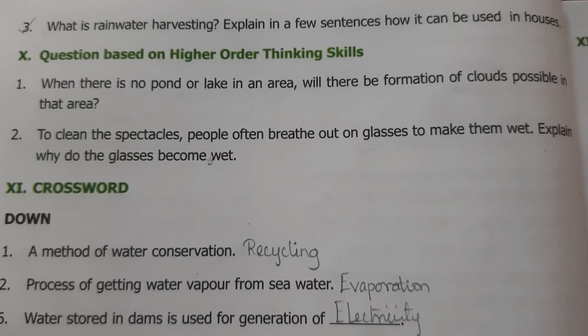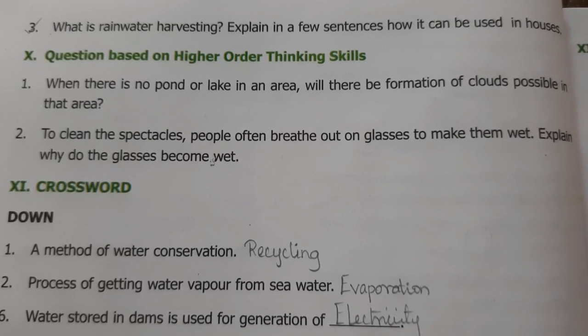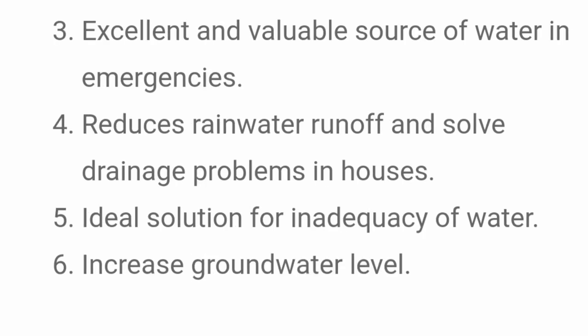Create awareness about the impact of throwing waste into water bodies. What is rainwater harvesting? Direct collection and use of rainwater is called rainwater harvesting. The system is easy to install, operate, and maintain for all types of houses. It is an excellent source of water in emergencies, reduces rainfall runoff, and solves drainage problems.